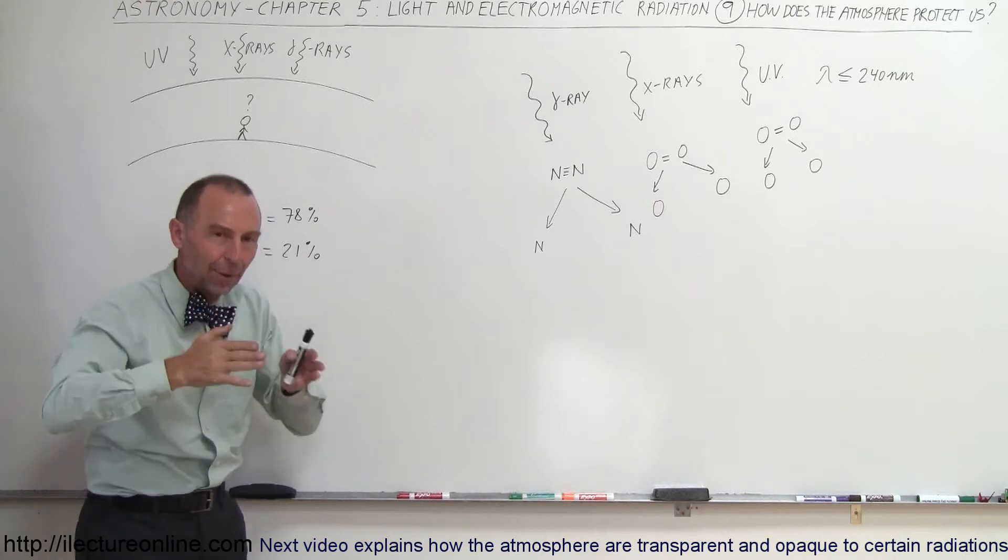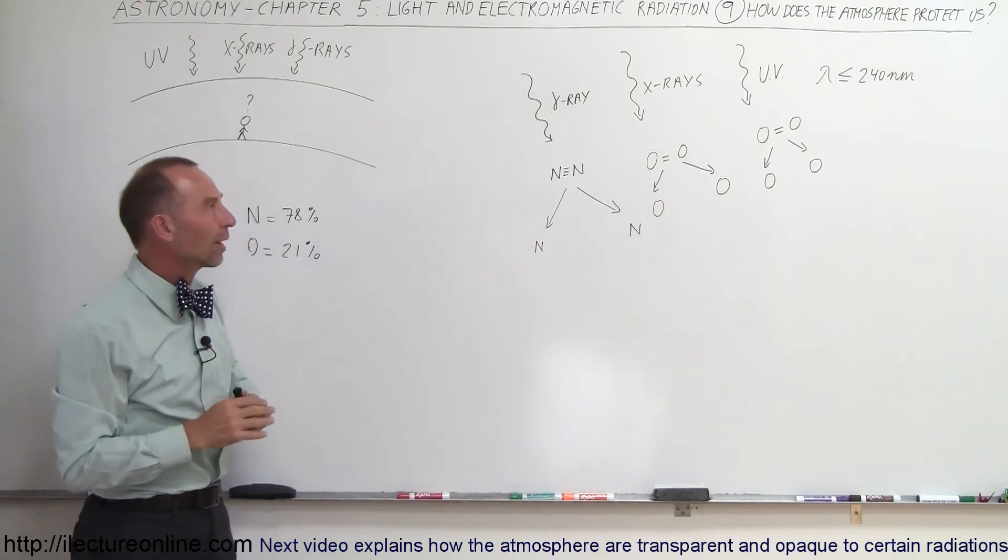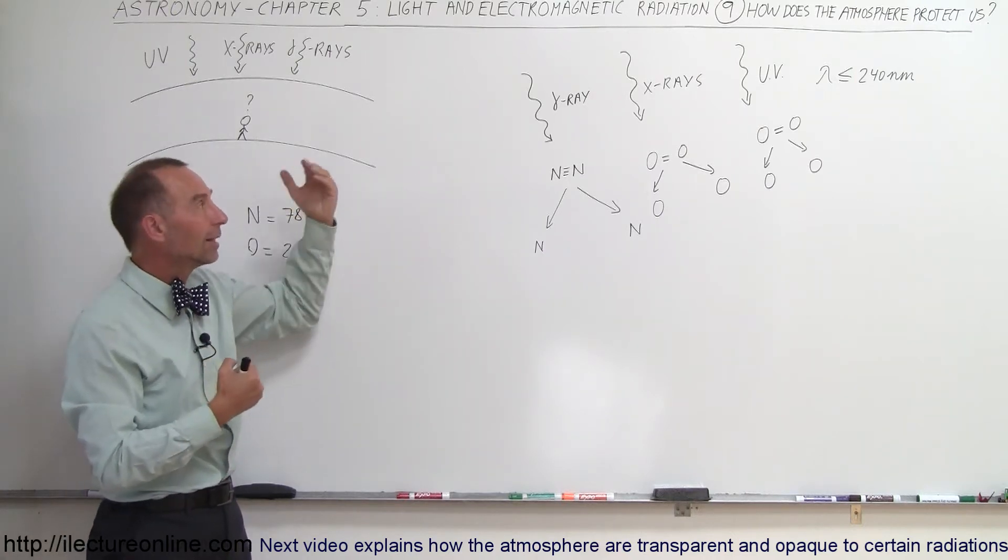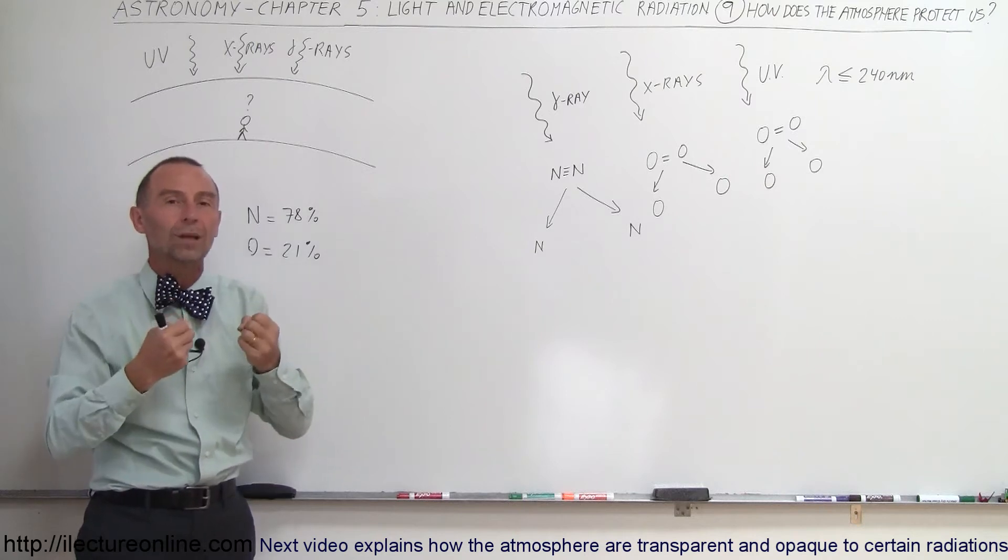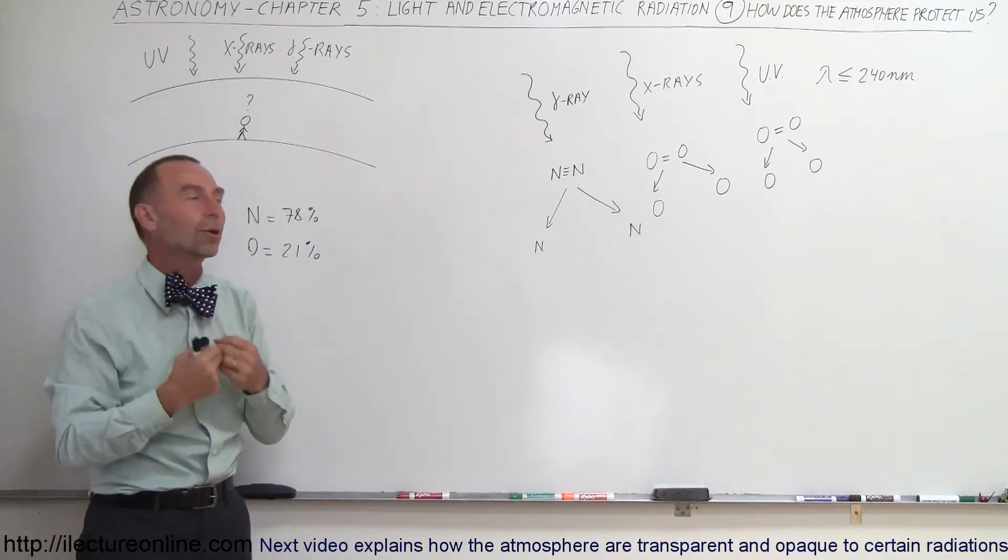Those rays come in, they break the bonds, the atoms go flying off in separate directions at very high velocities because they absorbed all the energy. But by breaking that bond, the x-ray or the gamma ray is absorbed and no longer is able to penetrate through. It no longer exists. The energy is simply absorbed.